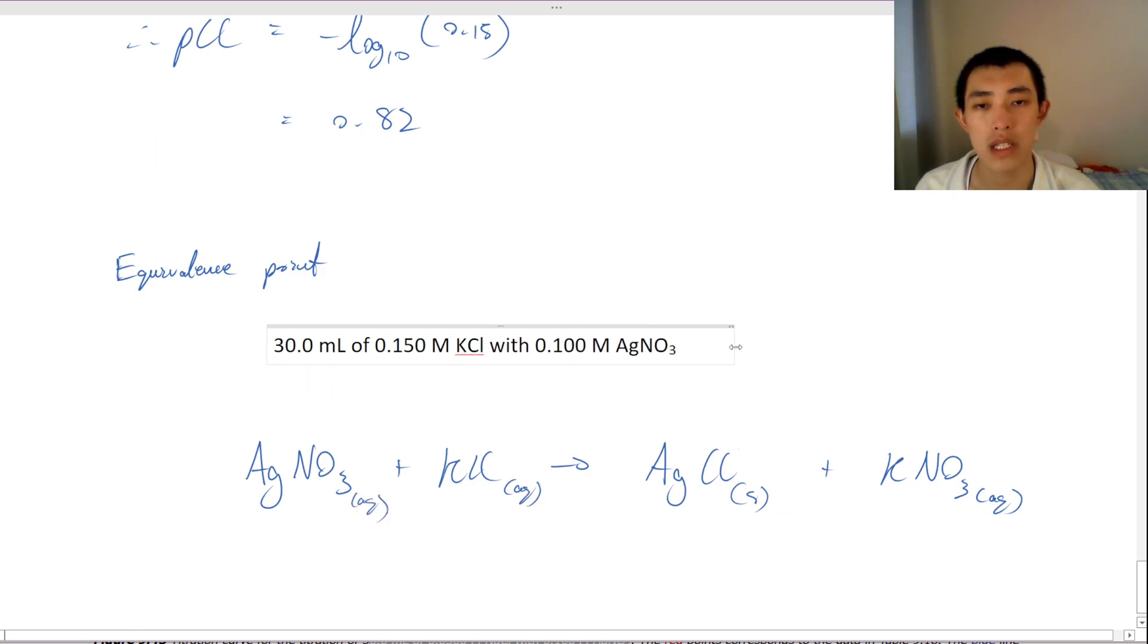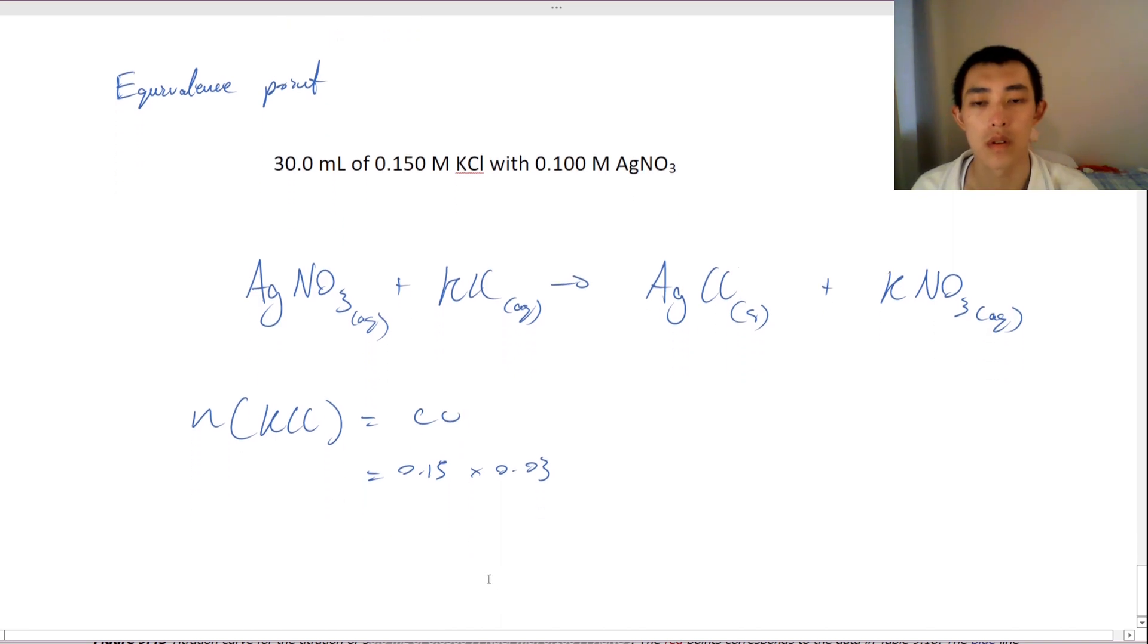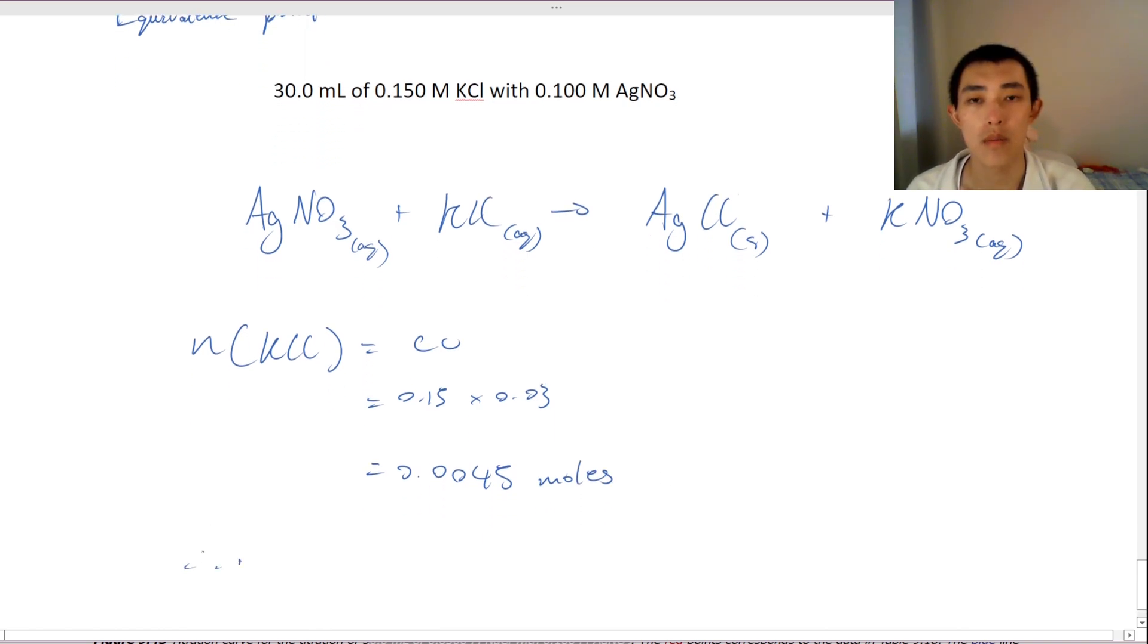So how much do we need to add? So we can find out how many moles of the KCl we really have. So we have CV, 0.15 times, it's going to give me 0.0045 moles. So therefore moles of silver is equal to 0.0045 moles.